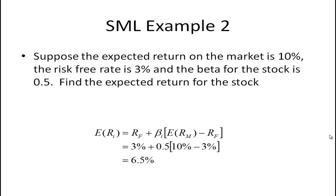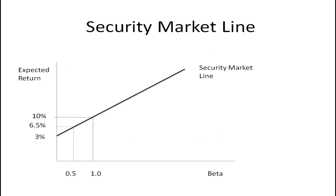In a second example, we have a beta smaller than 1 — specifically 0.5 — so you would expect a return lower than the market. It turns out to be 6.5%. On the graph, this is the case where beta is 0.5 and we expect a return of 6.5%.